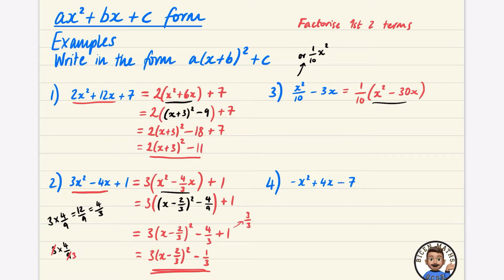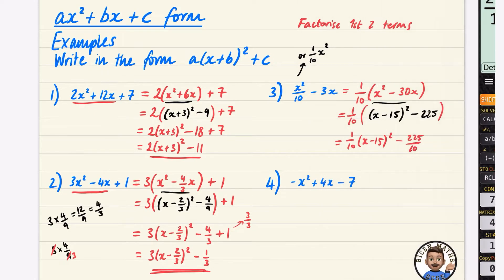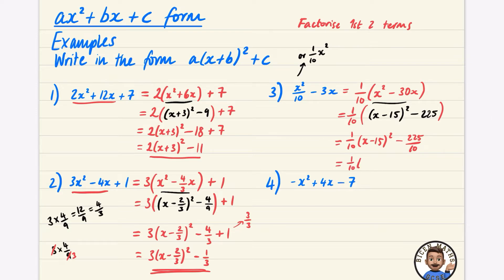This part now just needs completing the square. There's the 1/10 out front. I take half of 30, which is 15, and 15 squared is 225. So we get (1/10)(x − 15)² − 225/10. Simplifying 225/10 — the top and bottom can be divided by 5 — gives 45/2. So the answer is (1/10)(x − 15)² − 45/2.